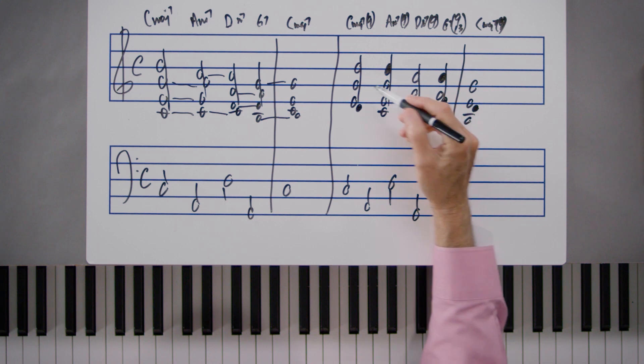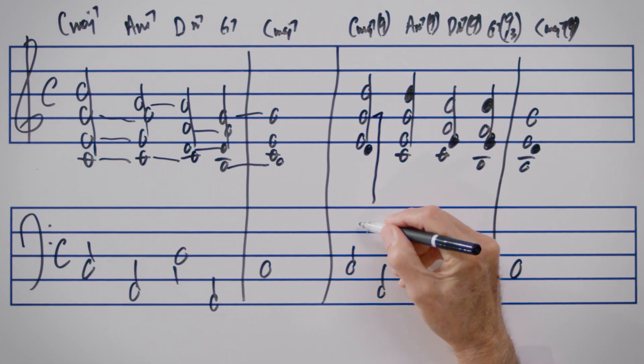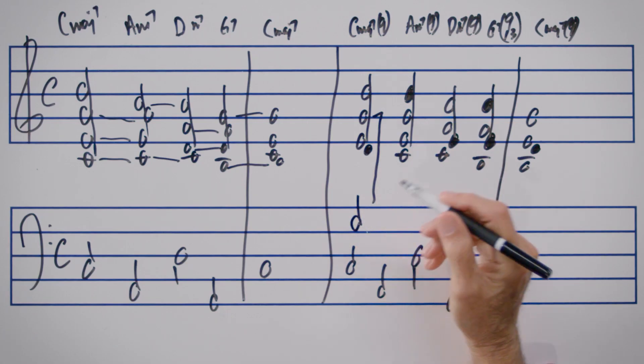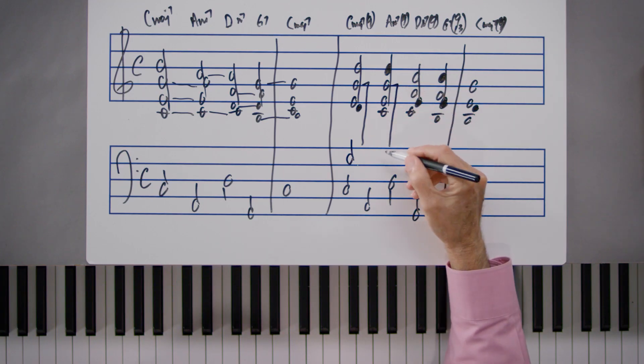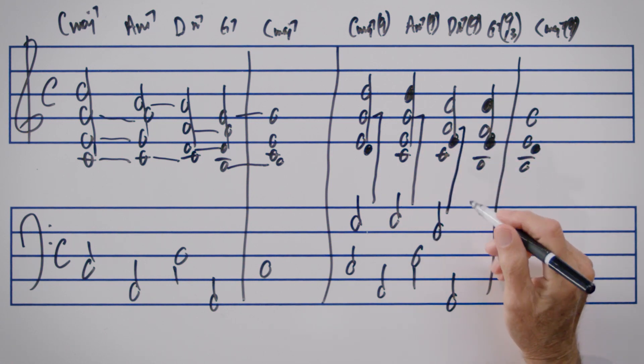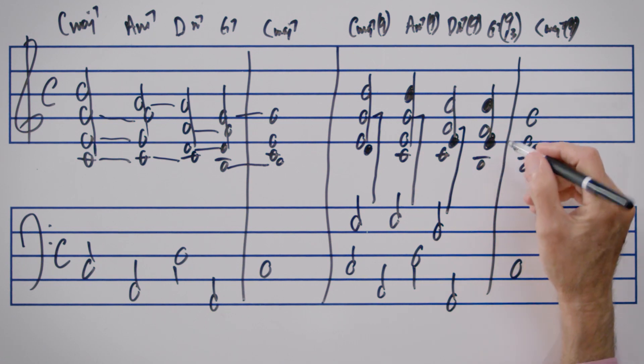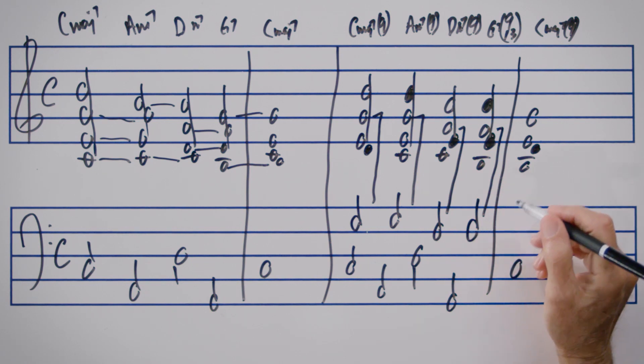We're going to drop the second voice one octave, which would mean that this G, which is the second voice of the C major 7, would now go to this G. The A minor 7, the second voice is once again a G, which would be one octave lower here. On the D minor 7, the F is the second voice, which would go there one octave lower. And on the G7, the F is the second voice, which would be one octave lower on this F.